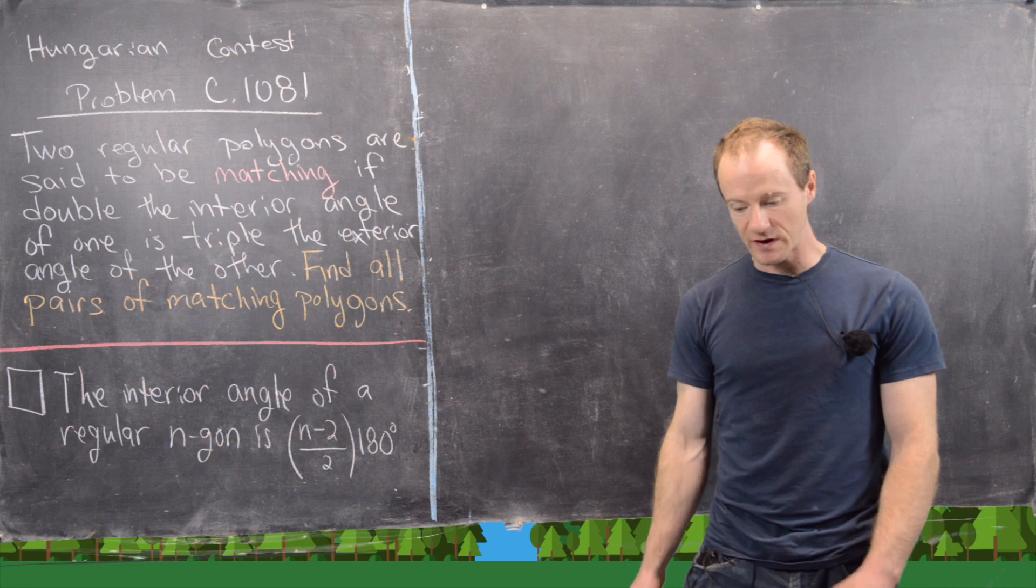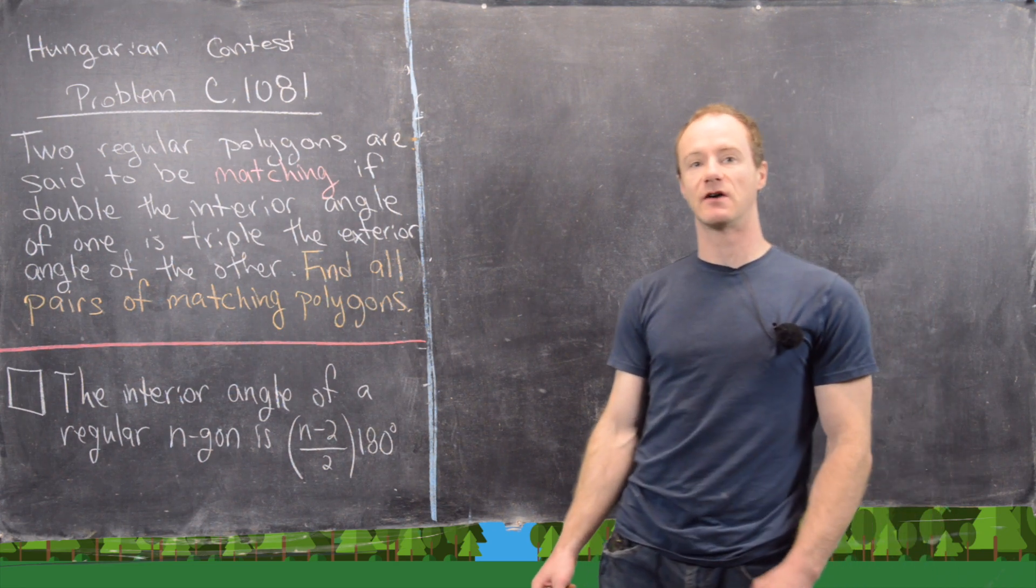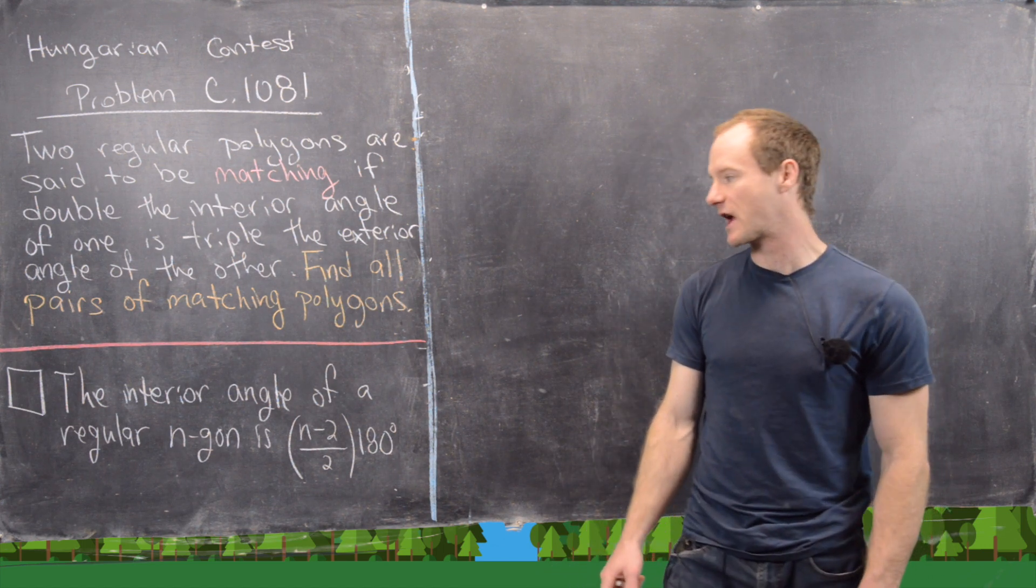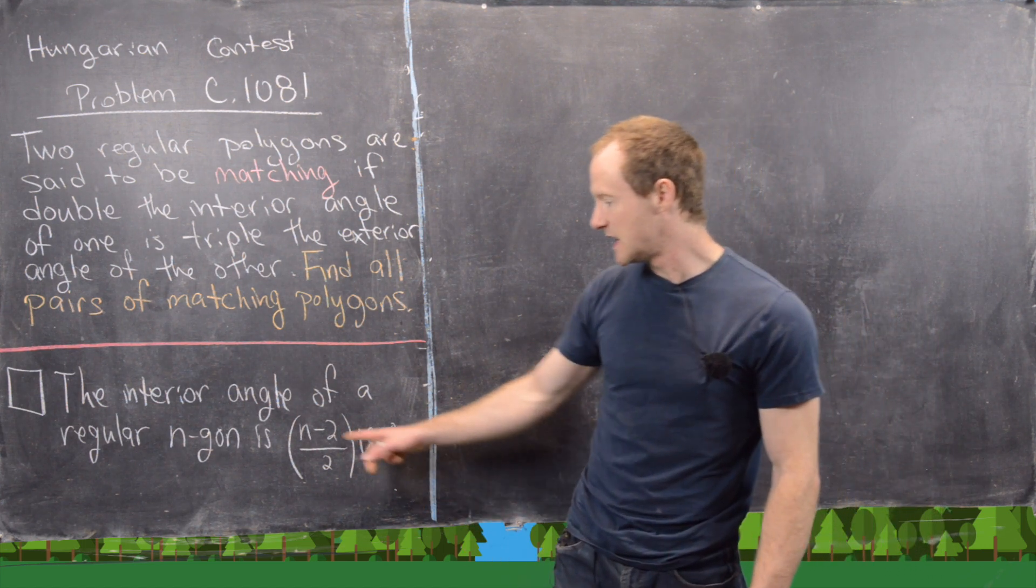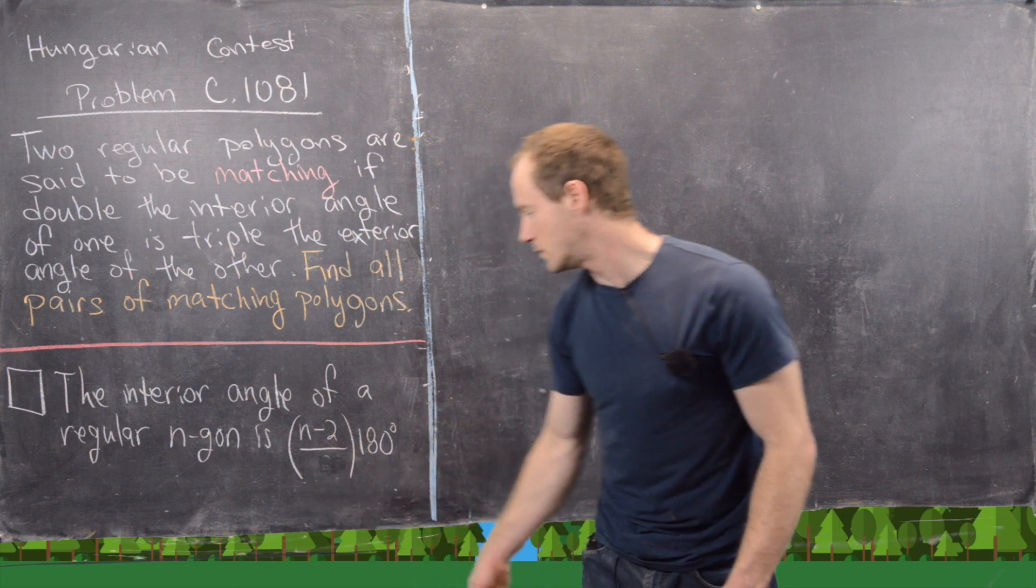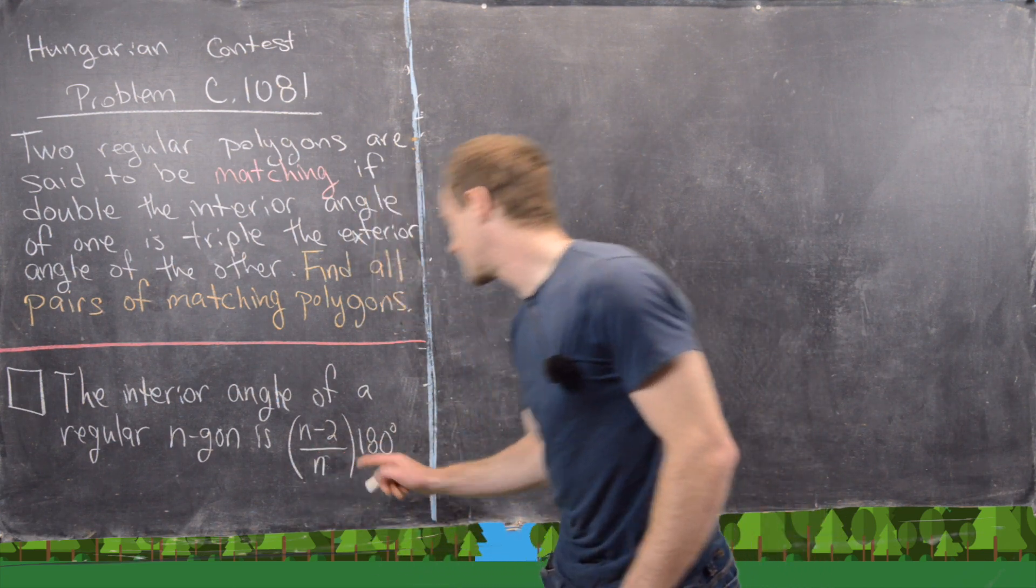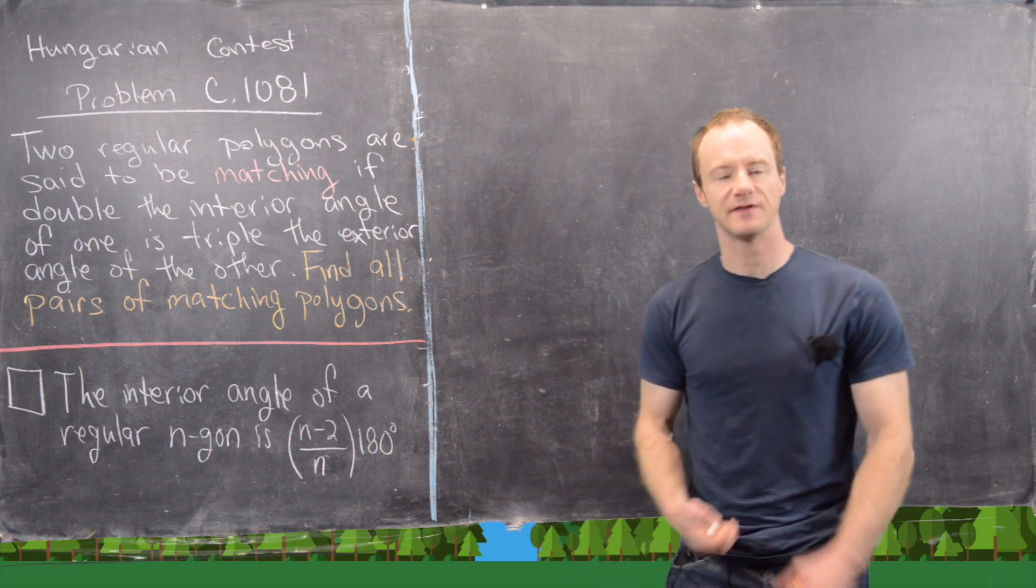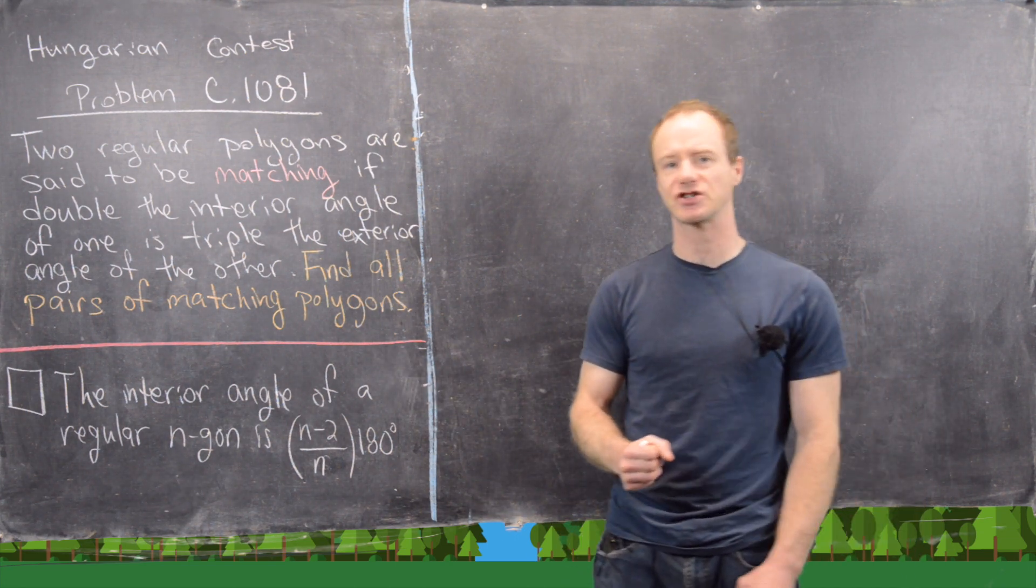There's really only one fact that will allow us to solve this pretty easily, and it's this fact which says the interior angle of a regular n-gon is (n-2)/n times 180 degrees.